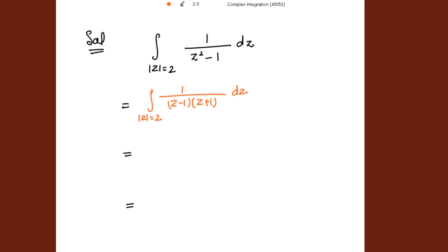The next step is to make the partial fractions. The trick is to write the integral over |z| = 2 with the first factor z minus 1 and the other factor z plus 1. Just put z minus 1 equal to 0, so z equals 1. Hide z minus 1 and put z equal to 1 — we get 1 over 2. So writing 1 over 2 in the numerator.